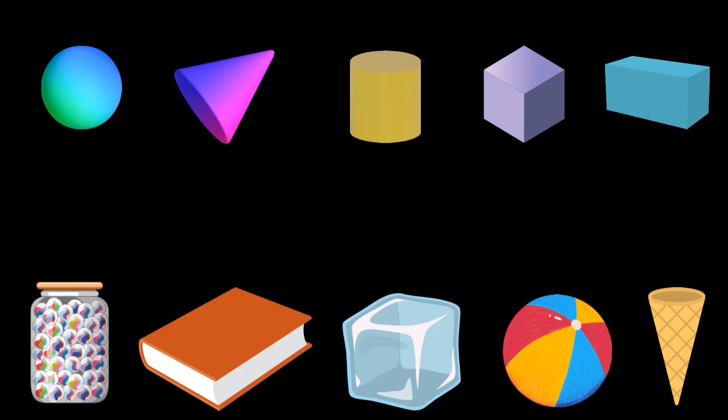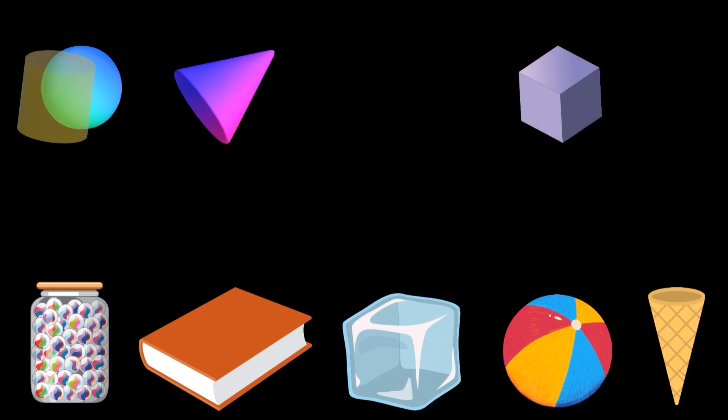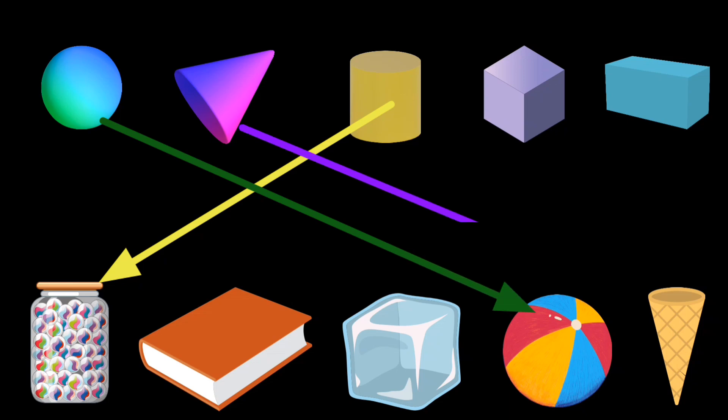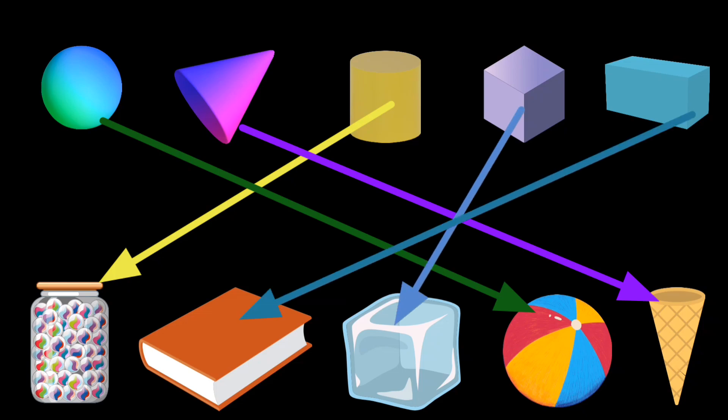Now let's match the shapes with things. Jar. Ball. Ice cream cone. Ice cube. Book.